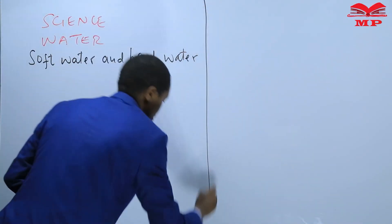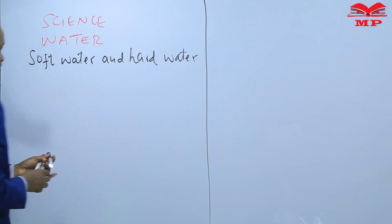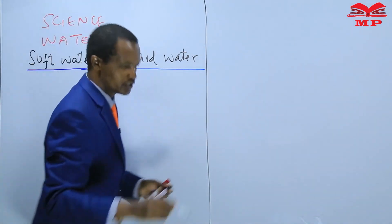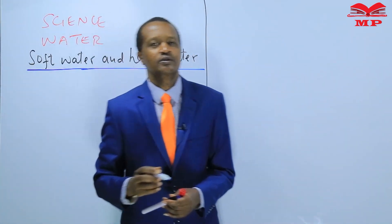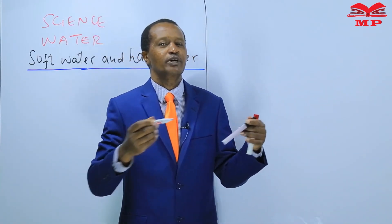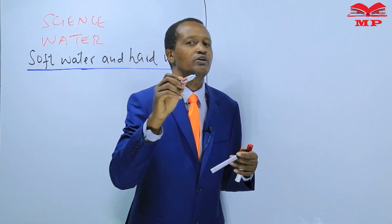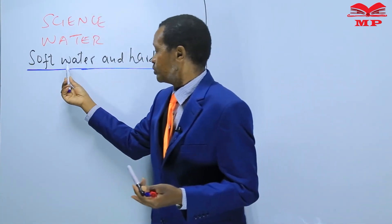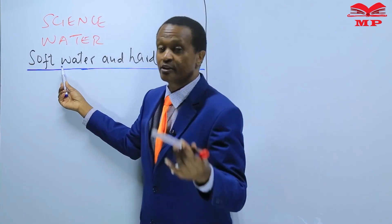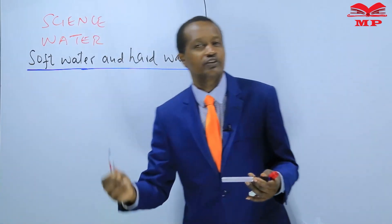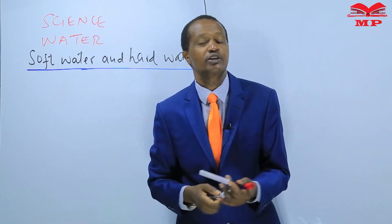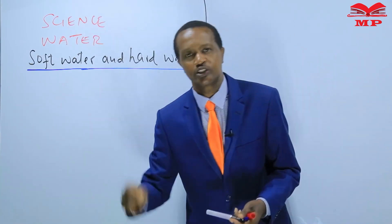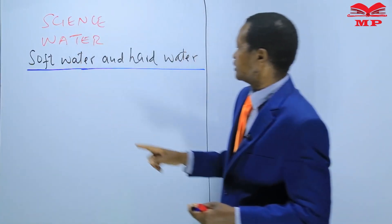In this class for standard eight, we are going to learn about soft water and hard water. We shall discuss the methods of softening water. We will define soft water, find out the meaning of hard water, the difference between hard water and soft water, and then discuss the methods of softening hard water.